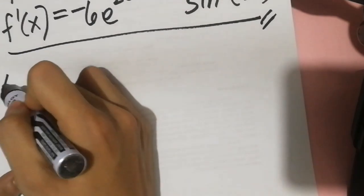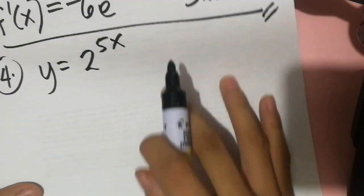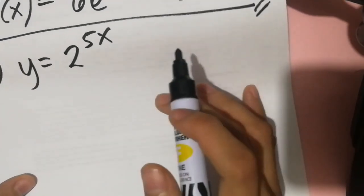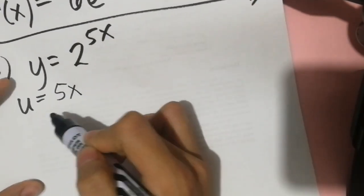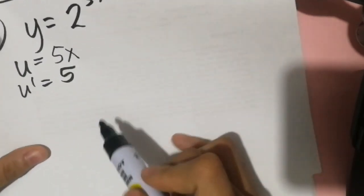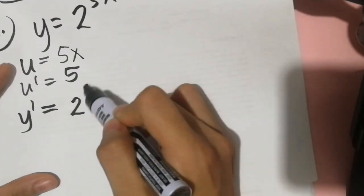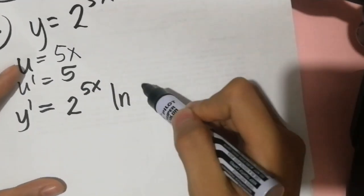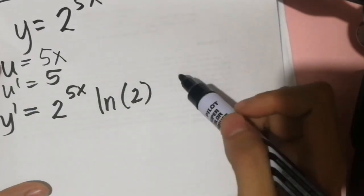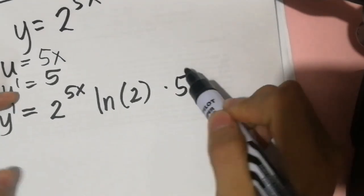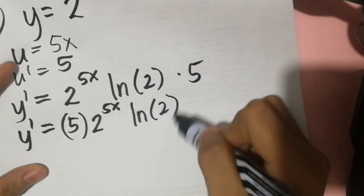Example number 4: y is equal to 2 raised to 5x. This time, use rule number 4 — a to the u. Let u equal the exponent, which is 5x, so u prime is 5. Applying rule number 4, y prime equals 2 raised to 5x times ln 2 times the derivative of u, which is 5. Therefore, y prime equals 5 times 2 raised to 5x times ln 2. Final answer.